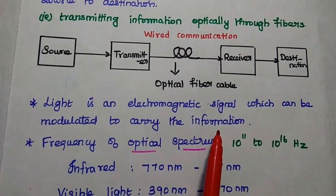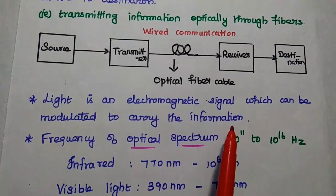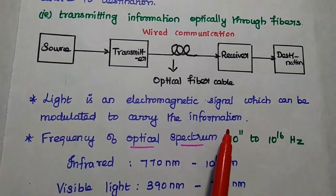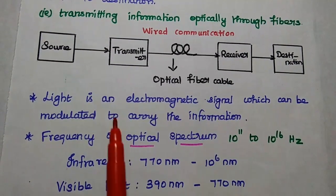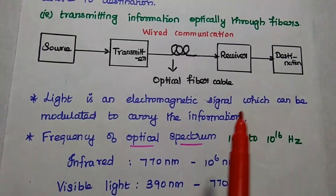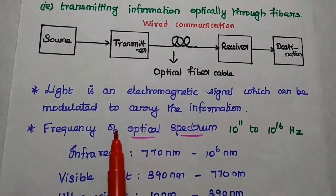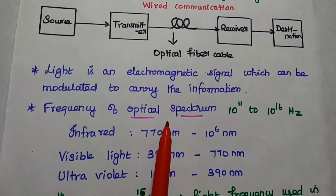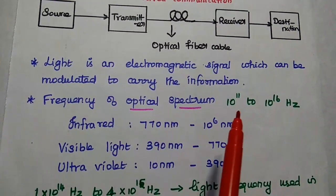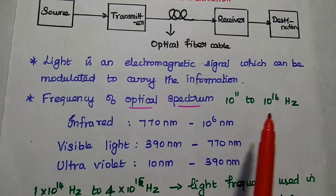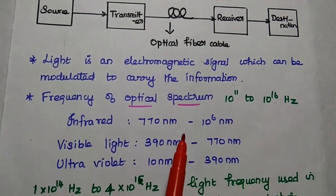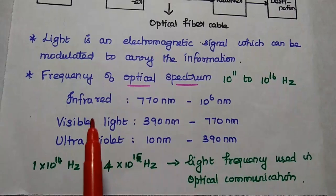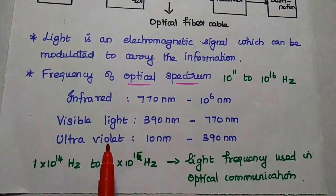Here the light is an electromagnetic signal. It can be modulated to carry the information. Here we are using light as a carrier signal to carry the information, so it can be modulated with respect to the message signal. The frequency of optical spectrum is from 10 to the power 11 to 10 to the power 16 hertz. It can be categorized into three types: infrared, visible light, and ultraviolet.